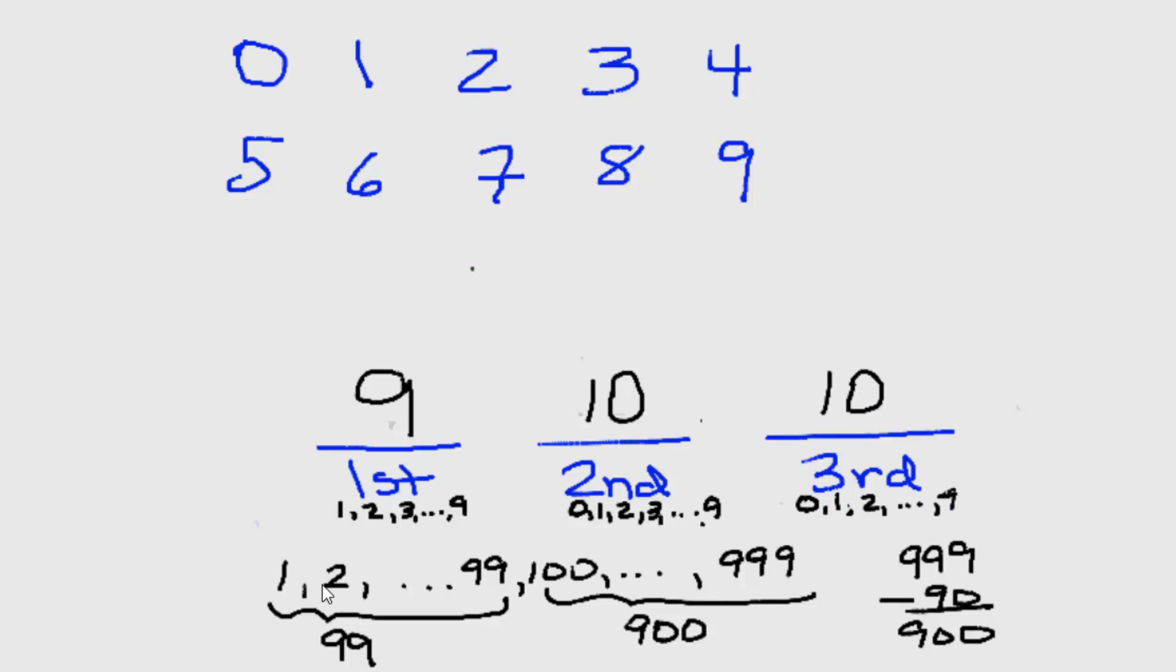This is not affected by what we've chosen for any of the previous digits. So according to the Fundamental Counting Principle, we can multiply these numbers together, and that would give us 900 3-digit numbers as we expected.